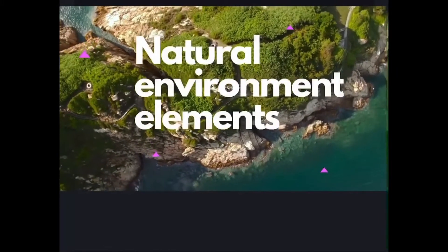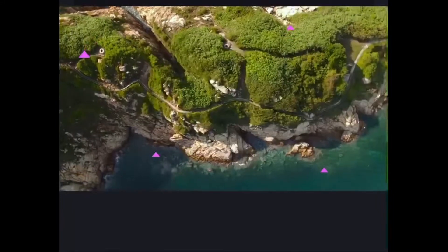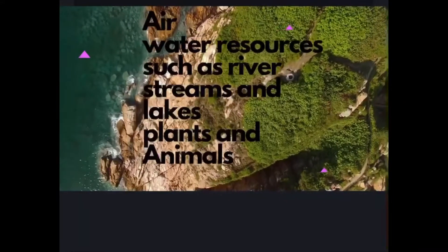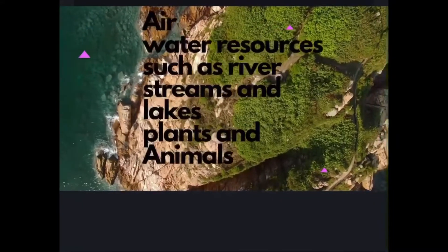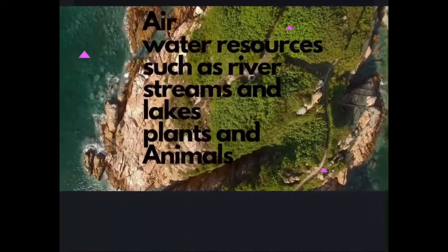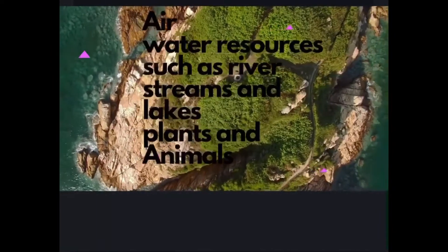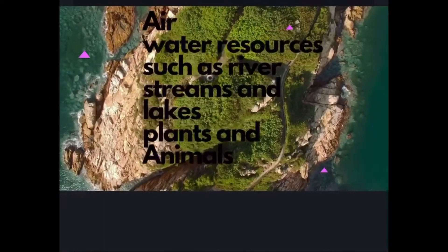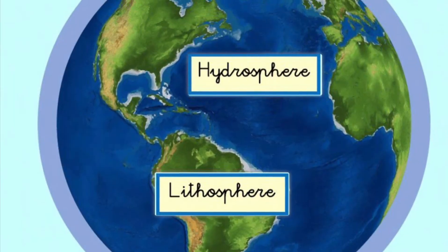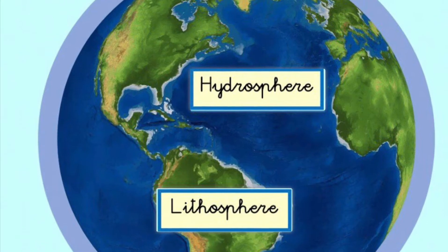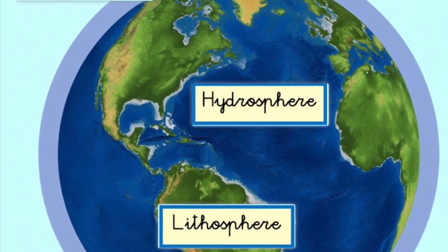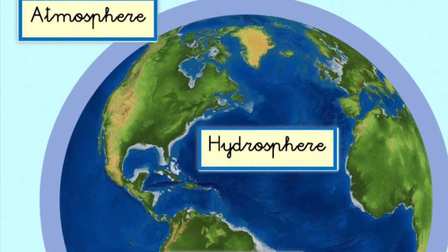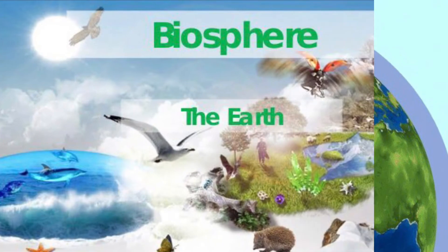Natural environment elements include air, water resources such as streams and lakes, and plants and animals. The domains of the environment are the lithosphere, hydrosphere, atmosphere, and biosphere.